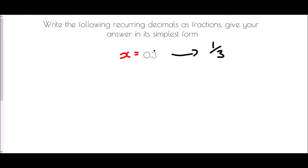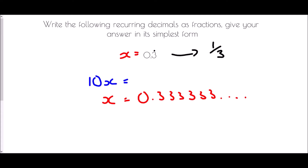I'm going to write 0.3 recurring out almost in full — quite a few decimal places — knowing that it repeats over and over. I want to remove that repeated pattern by multiplying so I can cancel it out by subtraction. Because only one digit is being repeated, I'm going to multiply by 10. Multiplying by 10 moves all digits one place to the left, giving me 3.3333333 and so on.